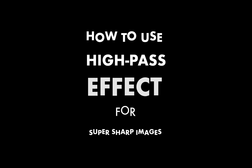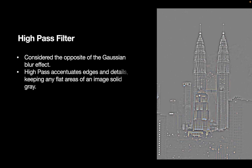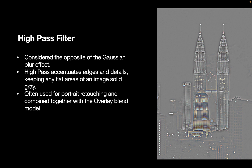Let's get right into this. But first, let's answer the question of what is the high pass filter in Pixelmator Pro's perspective. The high pass filter or high pass effect can be considered the opposite of the Gaussian blur effect. Instead of blending out the edges and details in an image, the high pass effect accentuates them, keeping any flat areas of an image solid gray. The high pass effect is often used for portrait retouching and is combined together with the overlay blend mode.